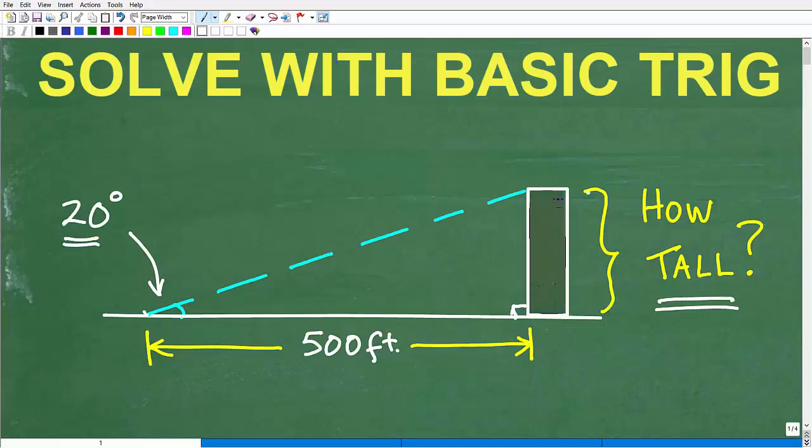Or did I say that right? I probably said that wrong. But anyways, you know what I'm talking about. It's not going this way. So it's a right angle, and we have 500 feet this way from the base all the way out where we took this measurement. The measurement is 20 degrees. We know this is 500 feet. So could we find the height of this building?